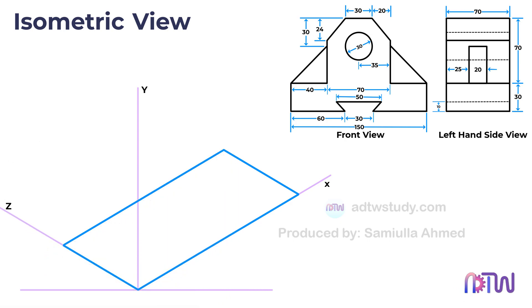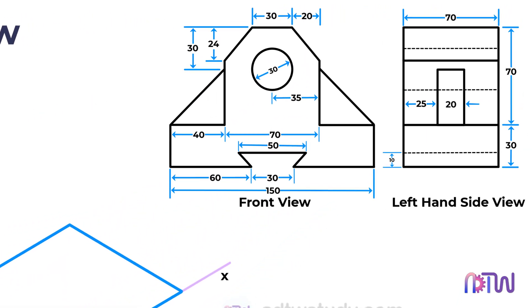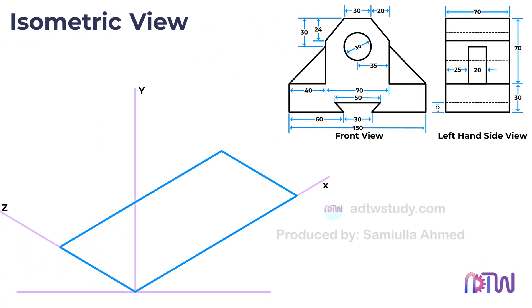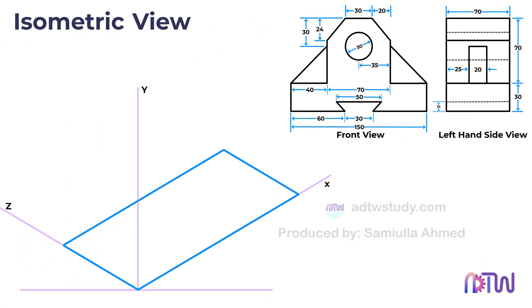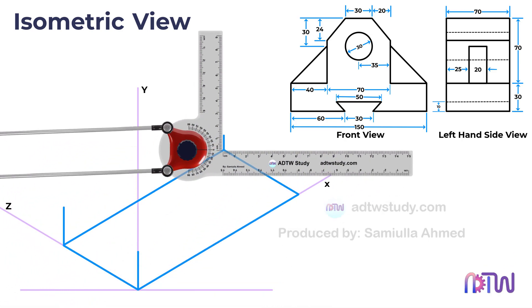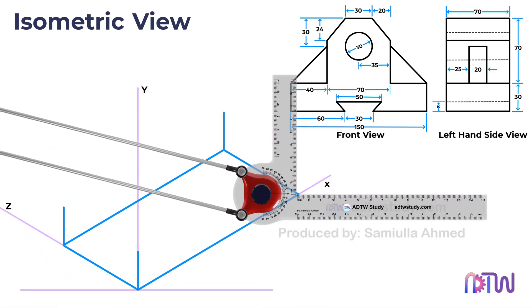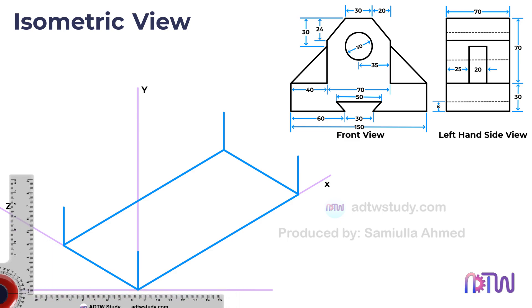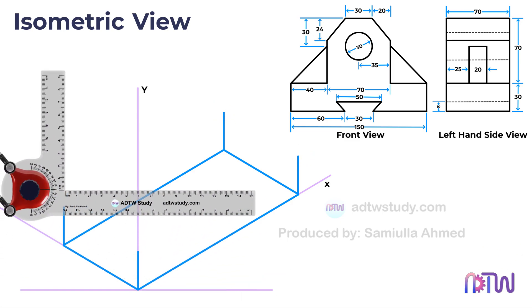In the left-hand side view we observe that the thickness of the base is 30 millimeters. To account for this, increase the thickness of the base by 30 millimeters by drawing vertical lines from each corner point of the outline. Finally, join the endpoints of the vertical lines to complete the base.